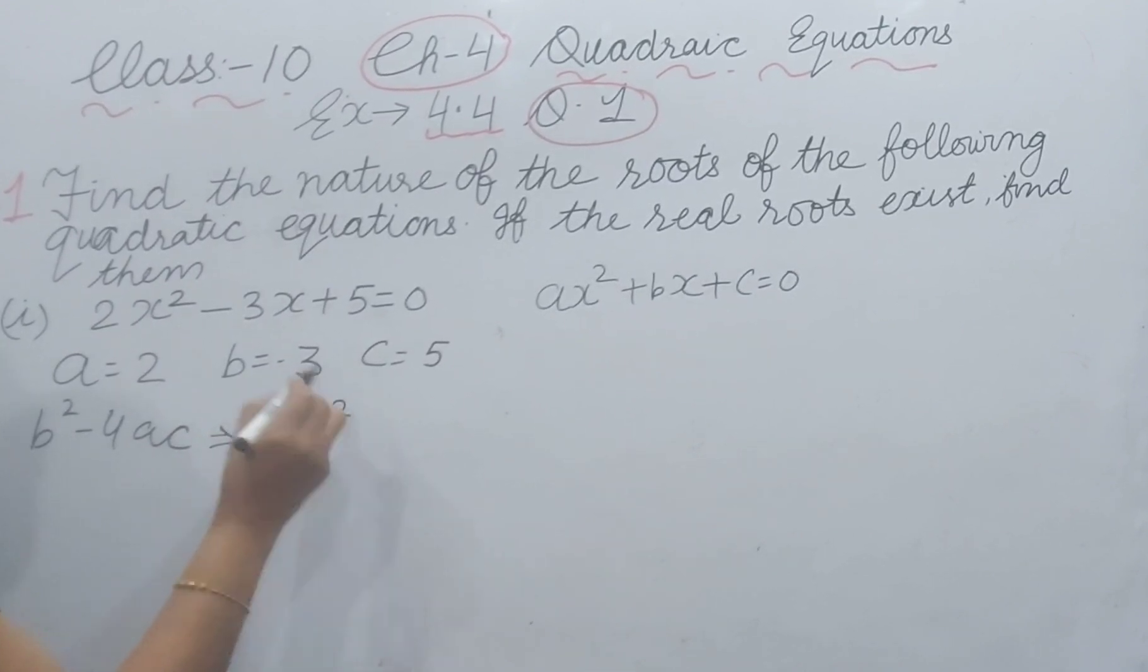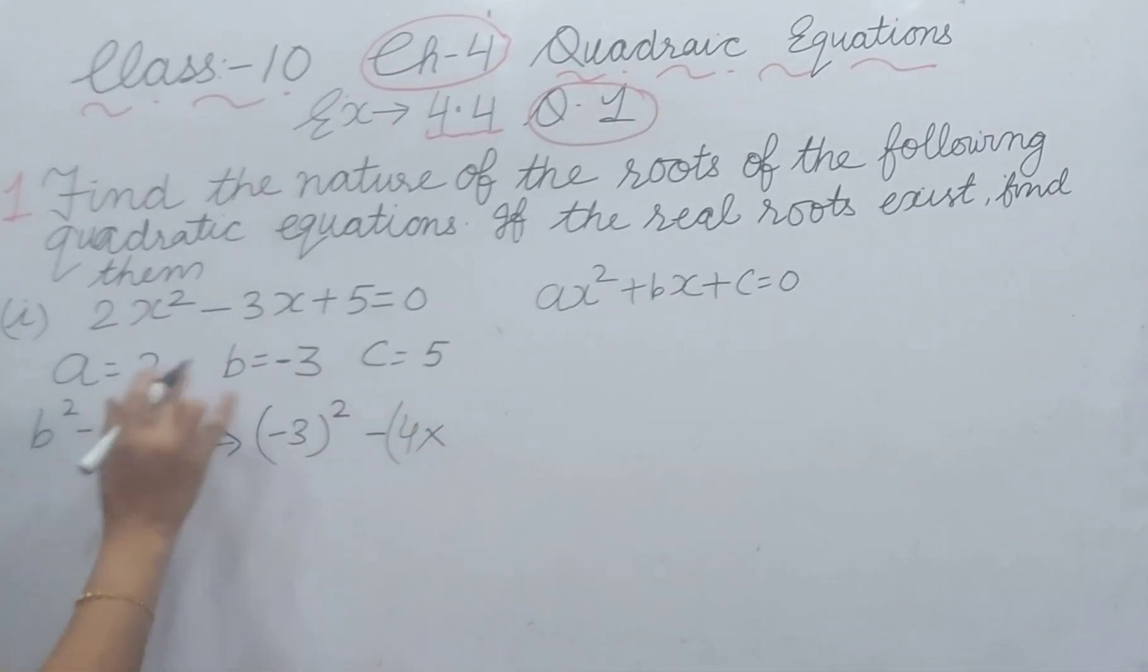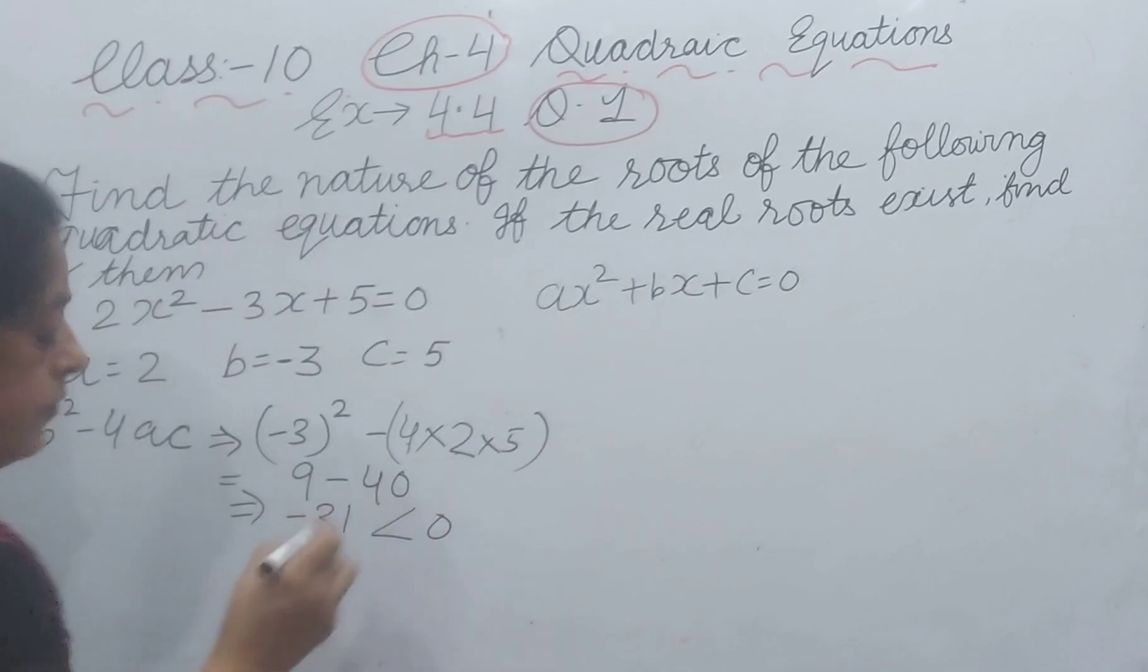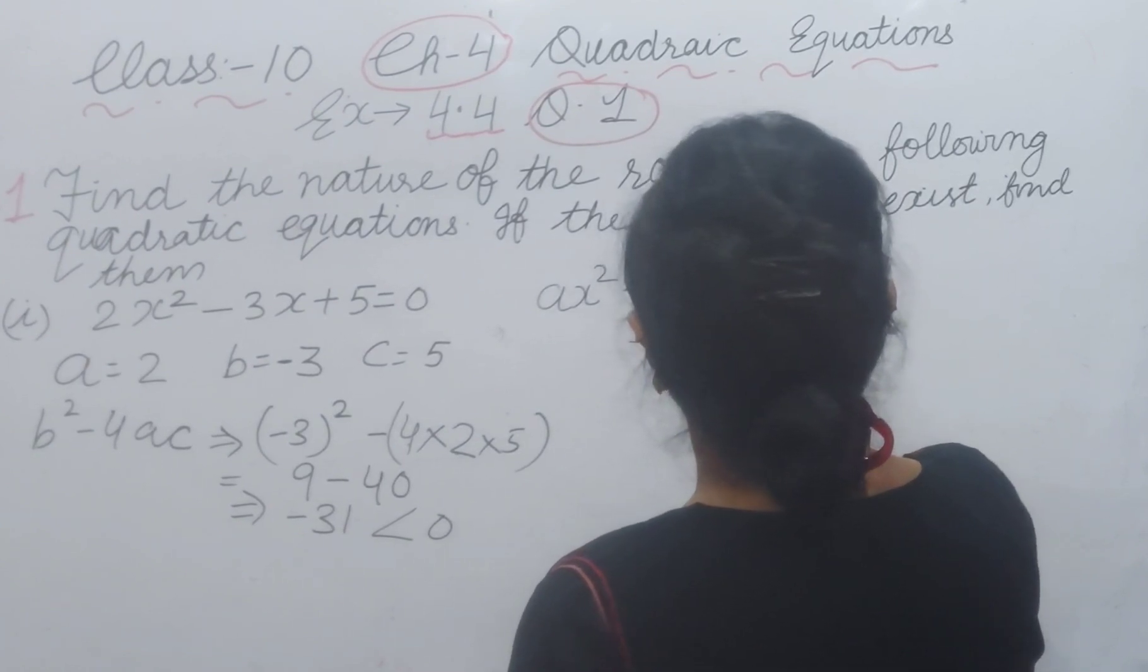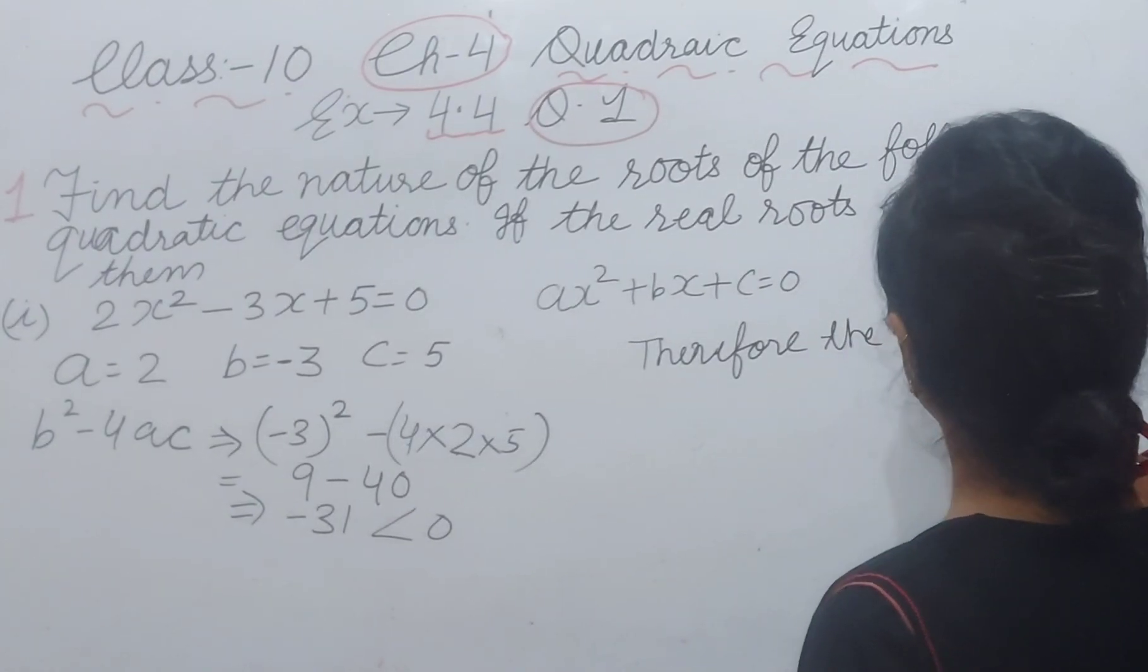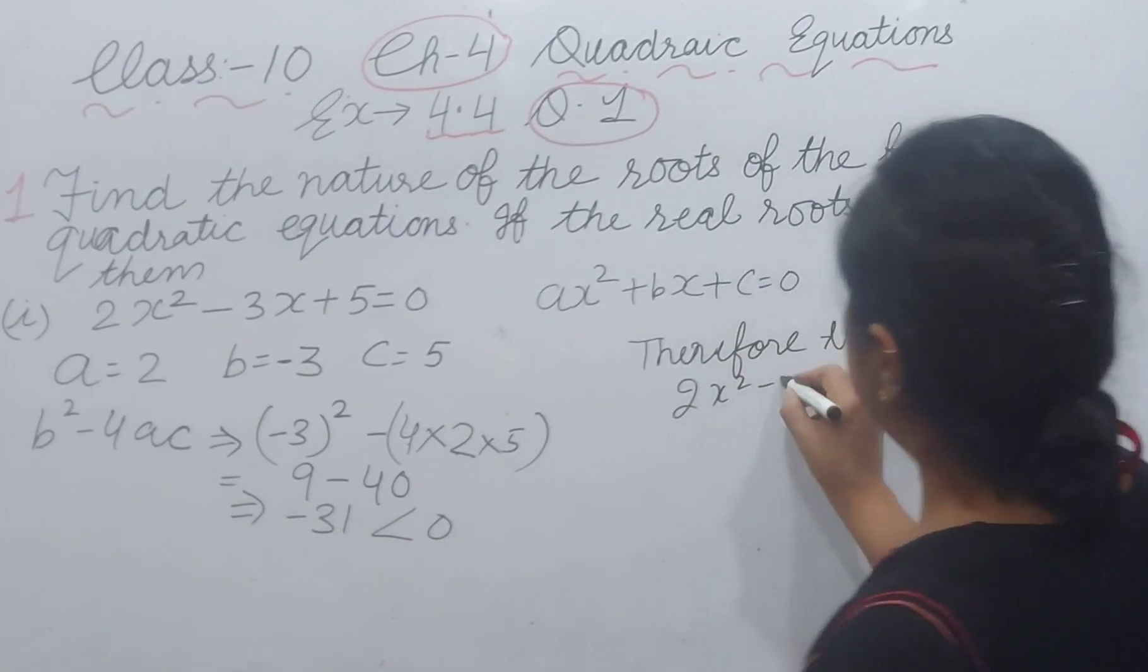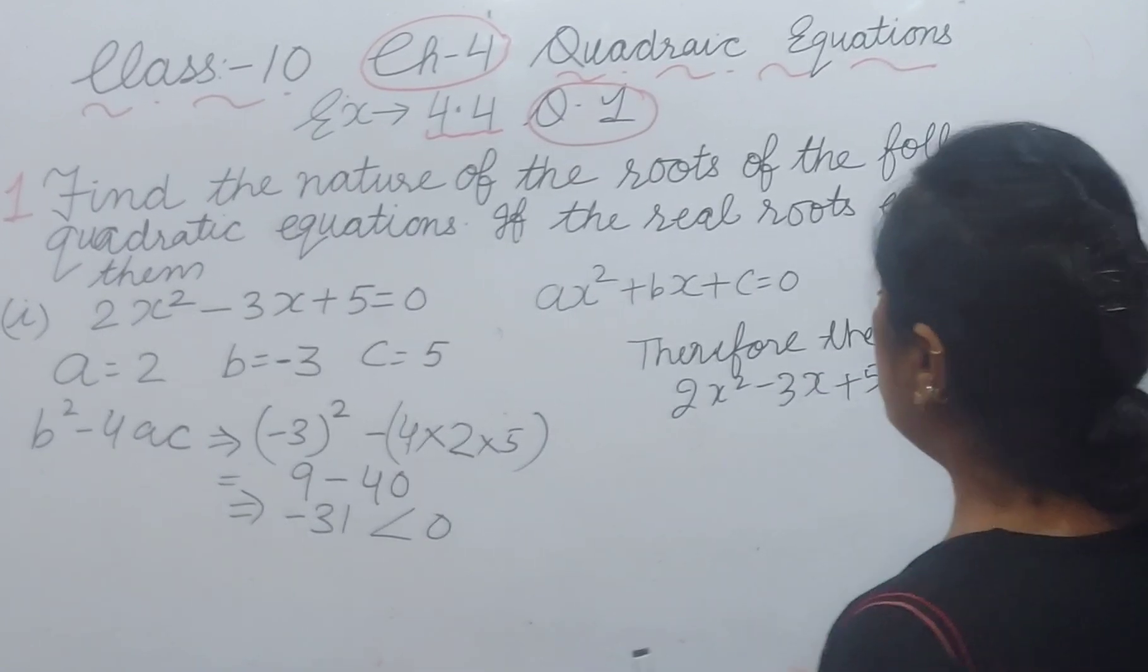b² is (-3)² = 9, minus 4 times a (which is 2) times c (which is 5). (-3)² is 9, 4 times 2 is 8, 8 times 5 is 40. That gives you 9 - 40 = -31, and -31 is less than 0.